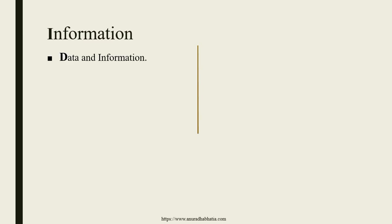Before discussing the different types, we should know what information is. When we talk about information, the first question that comes up is how do we segregate data and information. Data is the large collection of things that are available, and from that data, if we are able to extract what is needed for us, that is known as information.